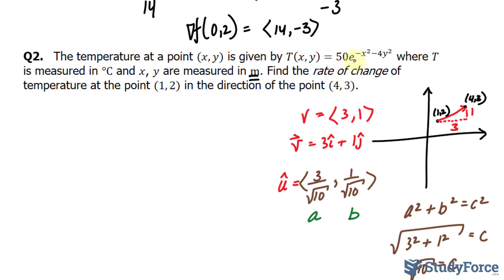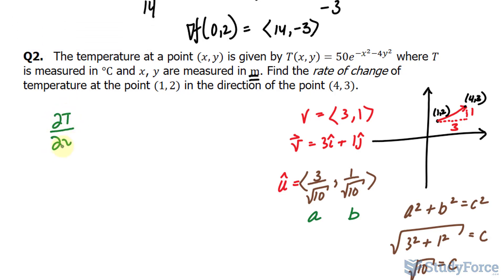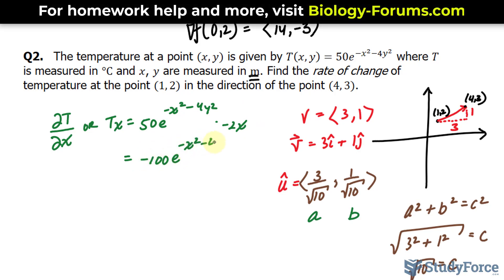Now we'll find the partial derivative with respect to x. The partial derivative of t with respect to x is equal to 50 e to the power of negative x squared minus 4y squared. Taking the derivative of the exponent with respect to x gives negative 2x. Cleaning this up, we end up with negative 100 e to the power of negative x squared minus 4y squared, times x.